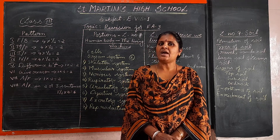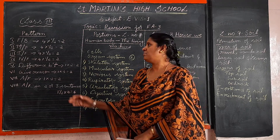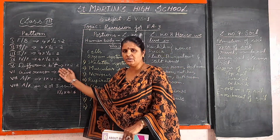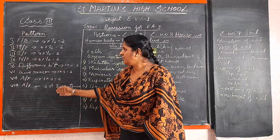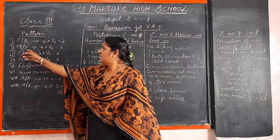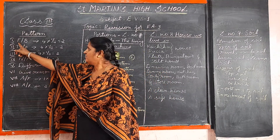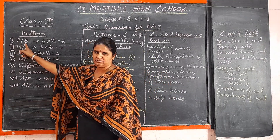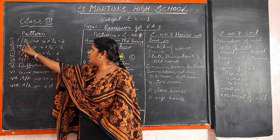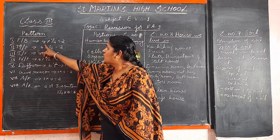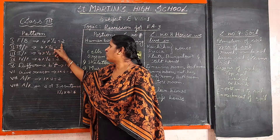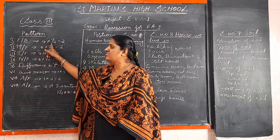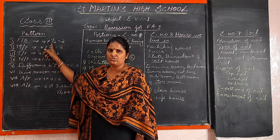Listen again — I am recalling the pattern for FA 3. The first section is fill in the blanks. There will be four portions, for two marks total. Each carries half a mark.